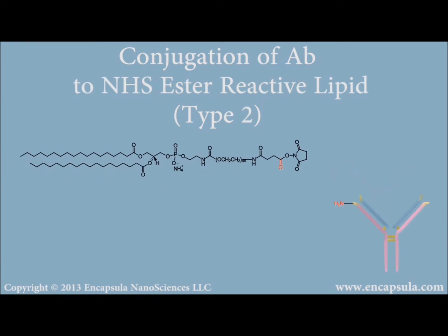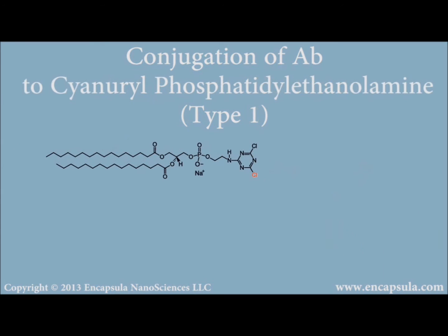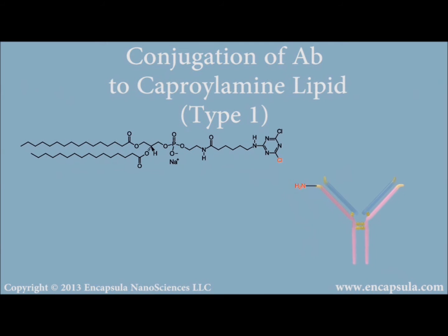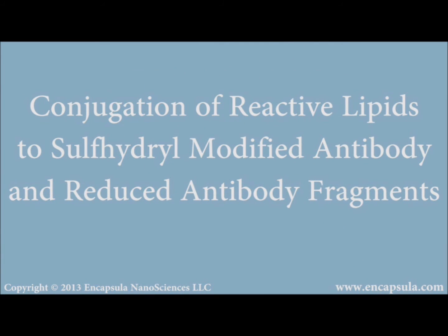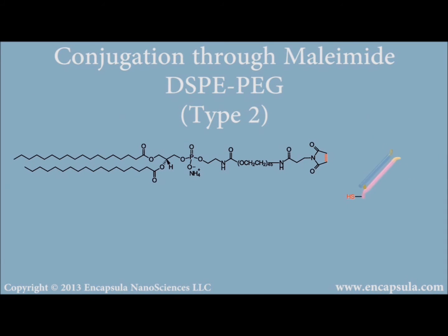Any NHS-modified lipid can be conjugated to the amine of the antibody in a single step. A stable amide linkage can also be achieved with lipids modified with a cyanurochloride group, including cyanuric PEG PE, cyanuric PE, and cyanurocaproylamine PE.